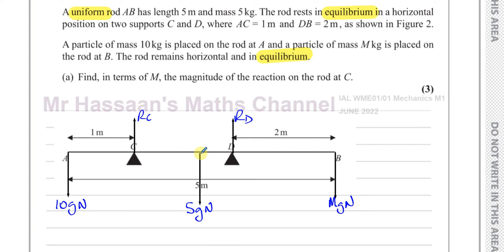We can choose to take moments about any point. Because we have two unknowns - M is unknown but we can express the answer in terms of M - we want to find the reaction at C. What we can do to make this easy is take moments about point D, because the moment of a force is the magnitude of the force times its distance from the point. If we take moments about D, the reaction force at D has zero distance, so its moment is zero. That eliminates RD, leaving RC as the only unknown.